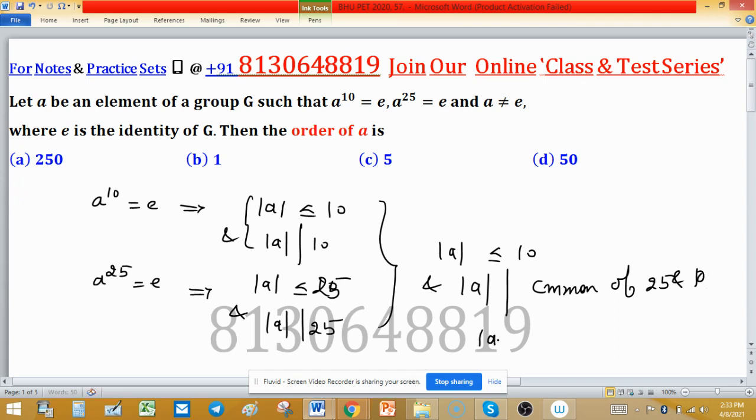It means that order of A is 5. How? You can write 25 as 5 into 5, and 10 as 2 into 5. This means that 5 is the only factor which can divide both 10 and 25. So, order of A is 5. So answer C is correct.